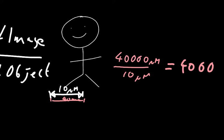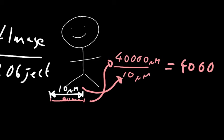So from knowing the size of the scale bar, we can measure it and work out the size of the image of the scale. We know the actual size of the object — which is the real size of what the scale represents — and the number of times bigger the image is than the object is the magnification.